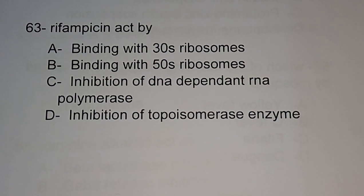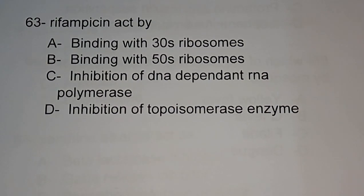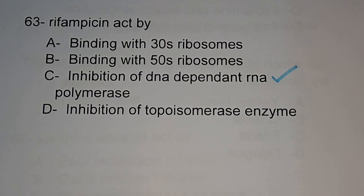Question number 63: rifampicin acts by — binding with 30S ribosomes, binding with 50S ribosomes, inhibition of DNA-dependent RNA polymerase, or inhibition of topoisomerase enzyme. The correct answer is inhibition of DNA-dependent RNA polymerase — rifampicin acts through inhibition of DNA-dependent RNA polymerase.